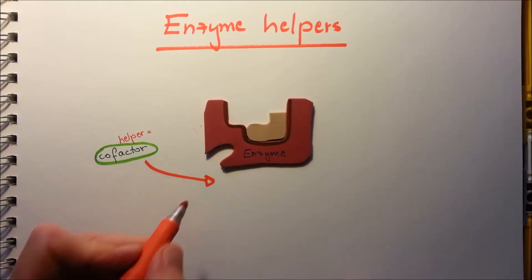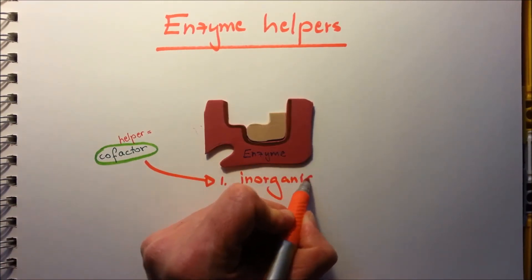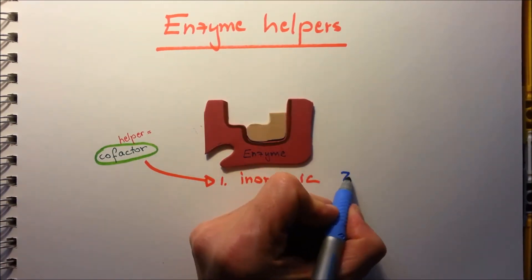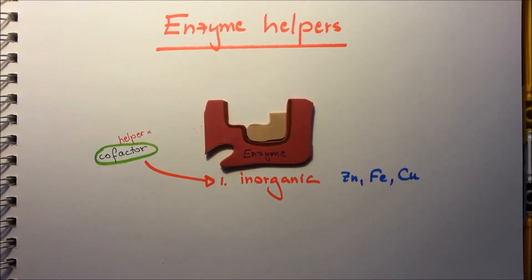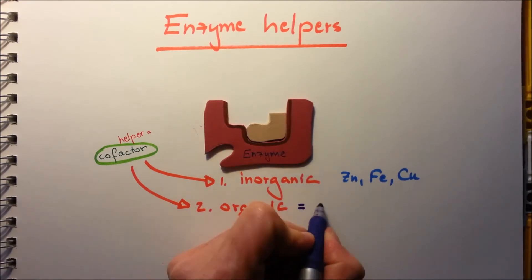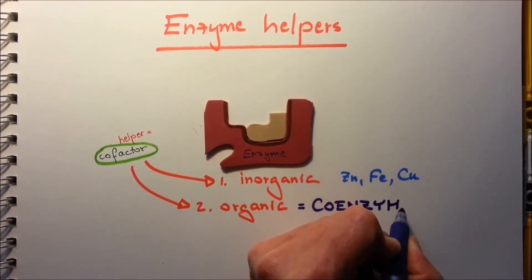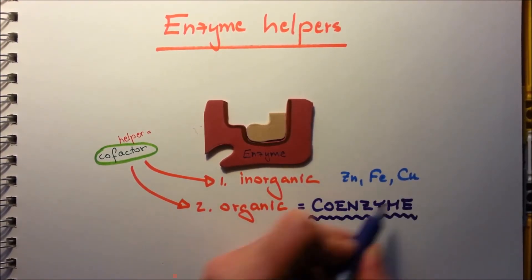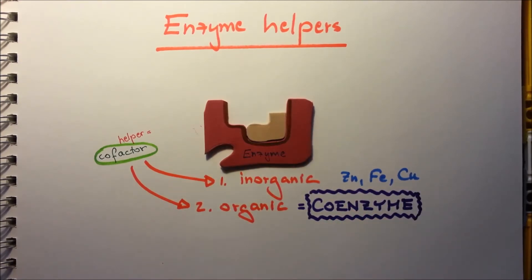The cofactor can be inorganic, such as zinc, iron, and copper, but also it can be organic, so it contains hydrogen and carbon. If it's organic, it's called the coenzyme. Many vitamins act as coenzymes in chemical reactions in our body, like vitamin B.